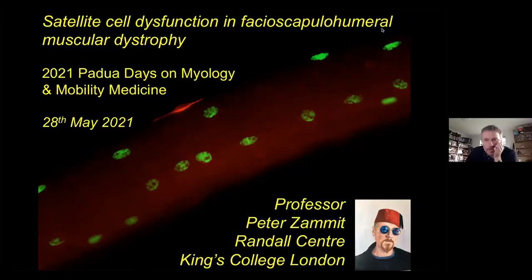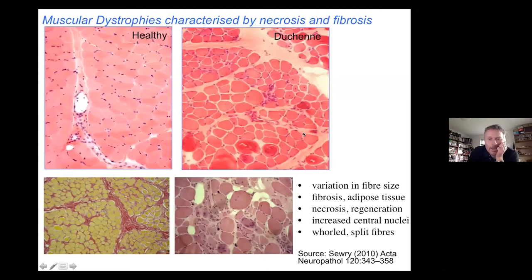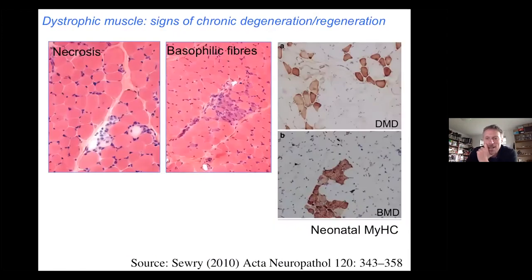Thank you very much, and thank you for inviting me to this excellent meeting. So muscular dystrophies — we all know the standard events that occur: lots of intermyofibrosis, fat infiltration, central nuclei, and signs of muscle regeneration, showing that the muscle is responding to degeneration by trying to regenerate, as shown here by neonatal myosin heavy chain.